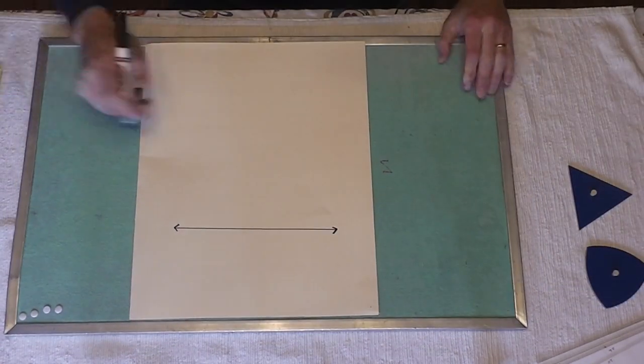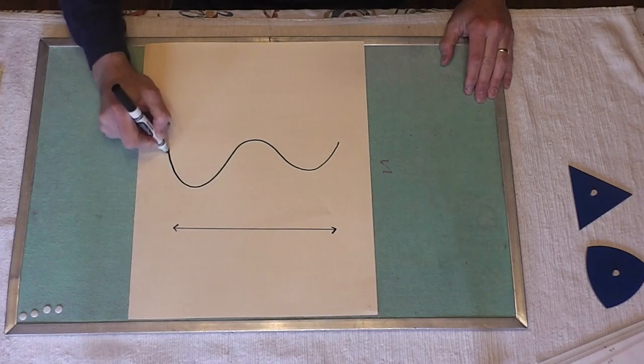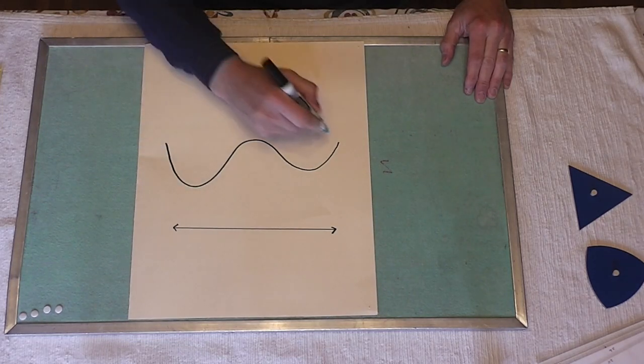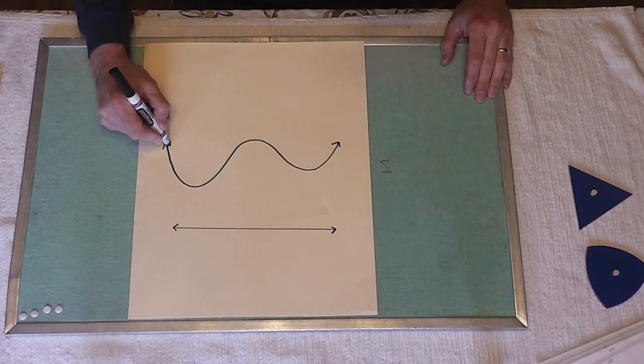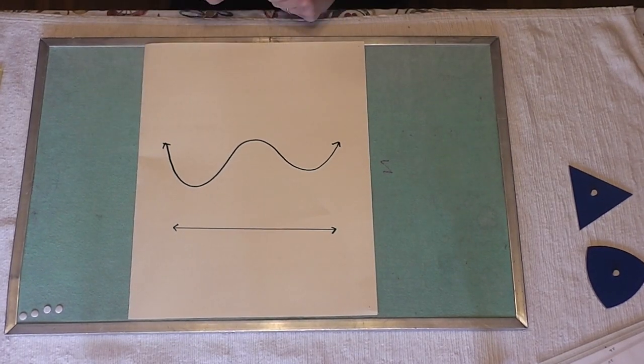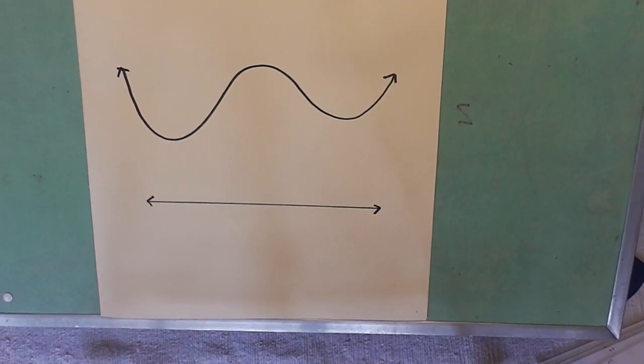I don't need a ruler for this next line. This is my curved line. I'll even put some arrowheads on here. You can see that the curved line is always changing direction.